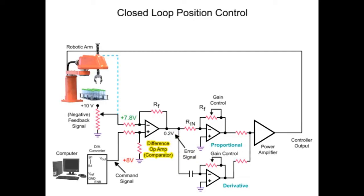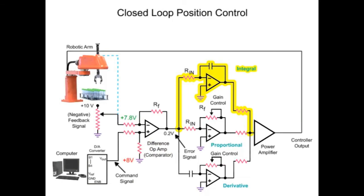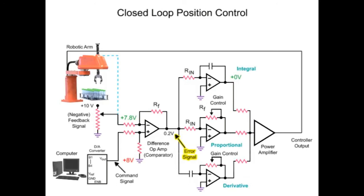To overcome the steady state error, an integral amplifier is added to the circuit. With an error signal of zero, the output voltage of the integral amplifier is zero. The integral amplifier increases gain depending on the duration of the error signal — the longer the error is present, the larger the amplifier gain. The output of the integral amplifier increases and is further amplified by the power amp to overcome the friction and mass of the robotic arm, completing the final move to the desired position. The feedback signal is now equal to the command signal, output voltages of the amplifiers are zero, and the robotic arm motor stops turning.